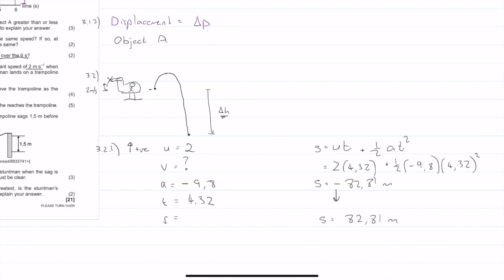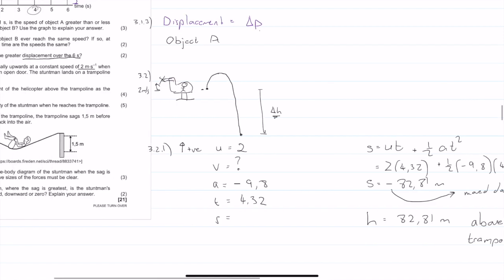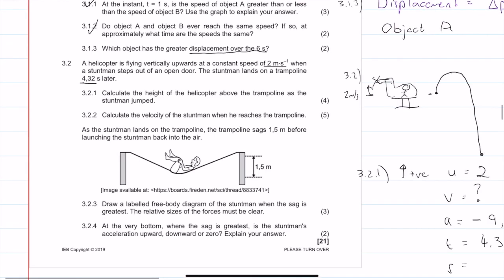The minus sign just indicates that the displacement is equal to 82.81 meters. So the stuntman has moved down. The minus just tells us that the stuntman moved downwards. So that means the height is equal to 82.81 meters above the trampoline. Cool stuff, and we get ourselves four marks for that.